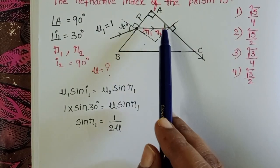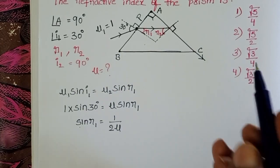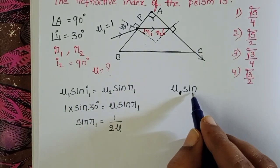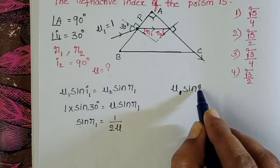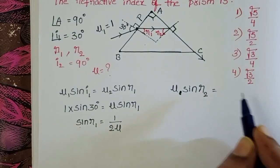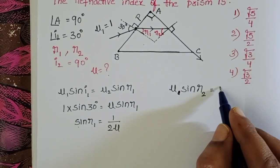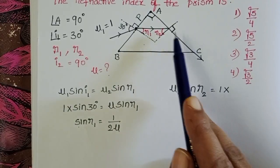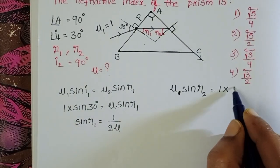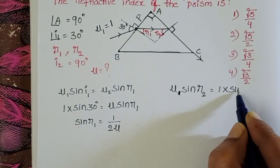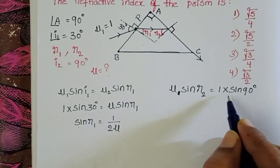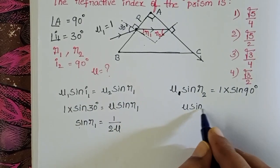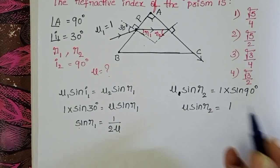Now applying Snell's law at the second surface AC. The refractive index of the prism is μ and the second medium is air (refractive index = 1). So: μ × sin R2 = 1 × sin 90°. Since sin 90° = 1, we get μ × sin R2 = 1, which gives sin R2 = 1/μ.